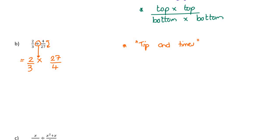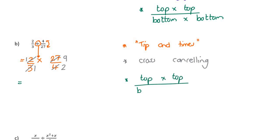Now that we're multiplying again, we do some cross-cancelling. 3 goes into itself once, 3 goes into 7 nine times. Is there anything else that cross-cancels? 2 goes into itself once and goes into 4 twice. Then we're back to multiplying: top times top over bottom times bottom. We've got 1 times 9, which is 9 at the top, and 1 times 2 at the bottom, which is 2. We don't bother changing that to a mixed number or decimal — we just leave it. Check that you didn't miss any simplifying: does 2 go into 9? No, they don't share common factors.